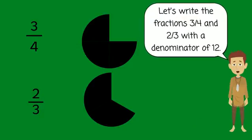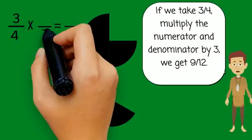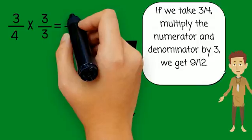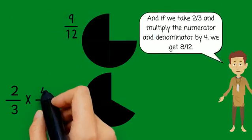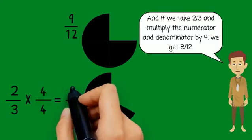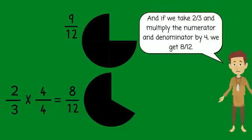Now that we know that 12 is the common denominator for the fractions 3-4ths and 2-3rds, we can write each fraction with a denominator of 12. If we take 3-4ths and multiply the numerator and denominator by 3, we get 9-12ths. And if we take 2-3rds and multiply the numerator and the denominator by 4, we get 8-12ths.